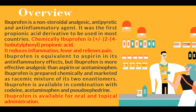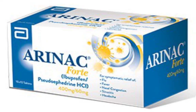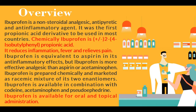Ibuprofen is equivalent to aspirin in its anti-inflammatory effects, but ibuprofen is a more effective analgesic than aspirin or acetaminophen. Ibuprofen is prepared chemically and marketed as a racemic mixture of its two enantiomers. It is available in combination with codeine, acetaminophen, and pseudoephedrine, and is available for oral and topical administration.